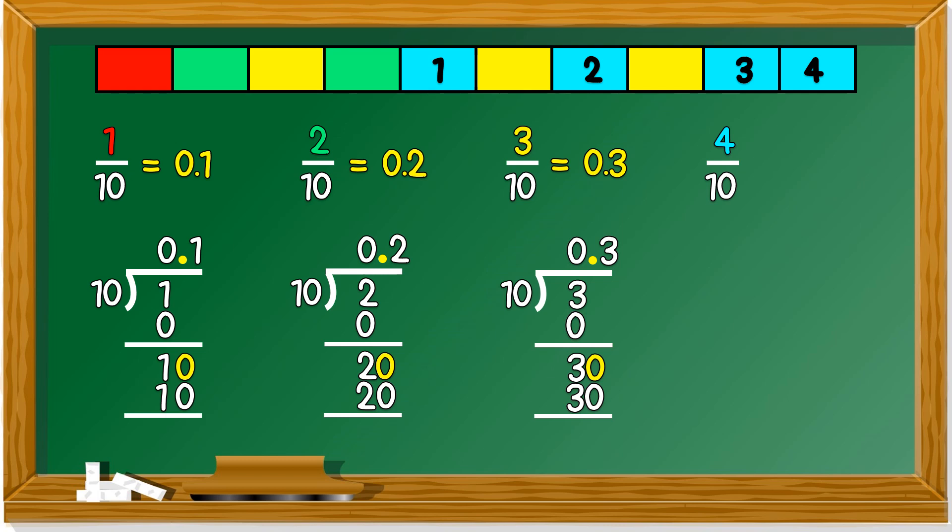How about this one? 4 over 10 is 4 divided by 10. 4 cannot be divided by 10, so 0 times 4 is 0, we get remainder of 4. When we put the decimal point, we get another 0. 40 can be divided by 10, yes it's 4. So we don't get any more remainder. 4 over 10 equals to 0.4.